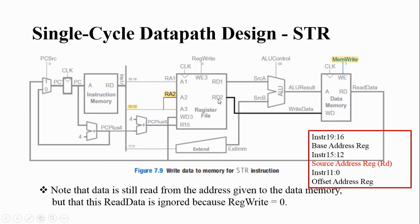From RD2 you are getting the content of the source register, which you are giving to WD. By making memory write as 1, in the next rising edge of the clock, whatever data you have given will be written to memory. So for the store operation, you are reading from the register file configured as the source register, and that content will be written to the data memory at the specified address, with memory write and clock asserted.